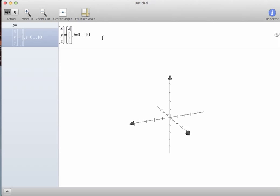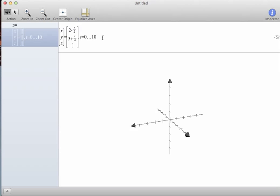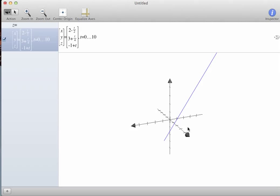So let's say I have 2 minus T over 2. And then I'm going to arrow down, and 3 plus T over 4, and then let's say I have negative 1 plus T. And right now T goes from 0 to 10, so I'm just going to hit enter and see what happens. And you can kind of see the line where it's passing through the first octant there.